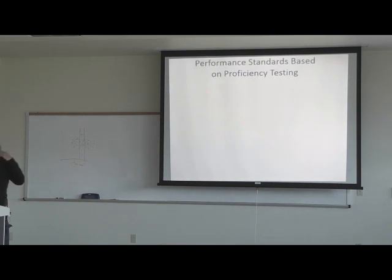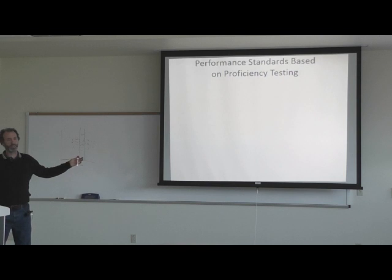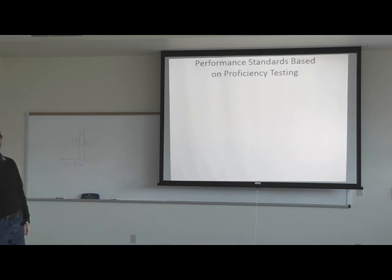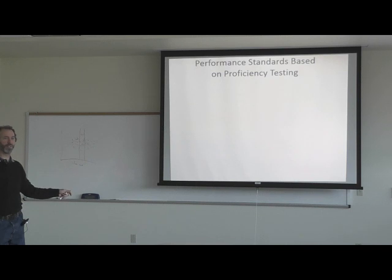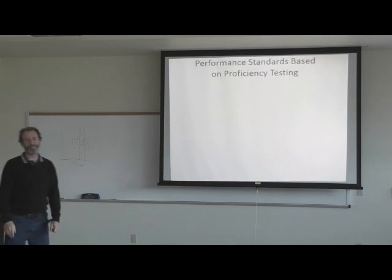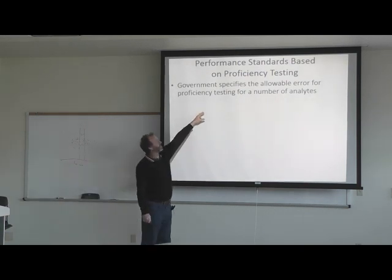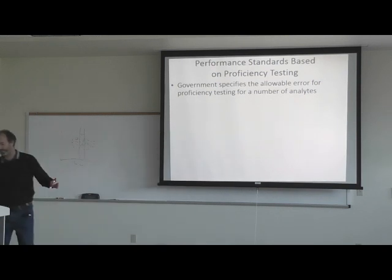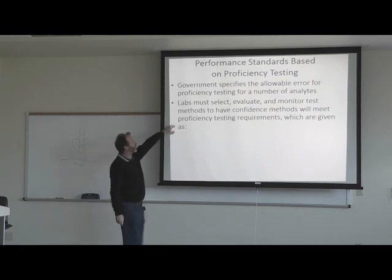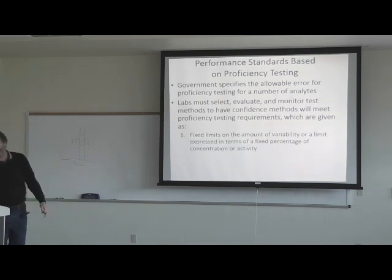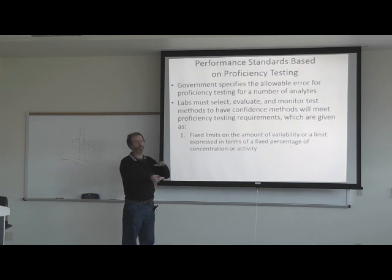Performance standards based on proficiency testing: those are outside groups like CAP that give you samples and test how well you do compared to your peers. The government specifies the allowable error for proficiency testing for a number of analytes. Labs have to select, evaluate, and monitor test methods to have confidence the methods will meet proficiency testing requirements, given as fixed limits on the amount of variability or a fixed percentage of the concentration or activity.